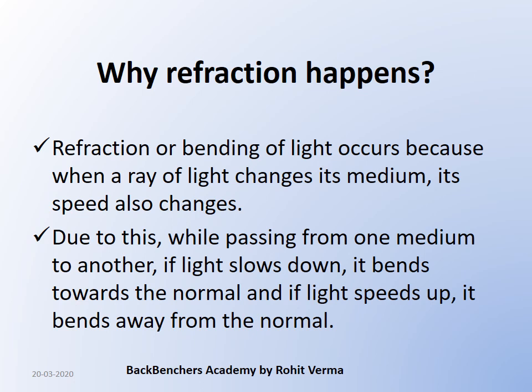Due to this phenomenon, while passing from one medium to another, if the light slows down it bends towards the normal — it can't scatter away from its ideal position. And if the light speeds up, it automatically shoots away from the normal. In simple terms, refraction happens just because the speed of light is changing while traveling from one medium to another.